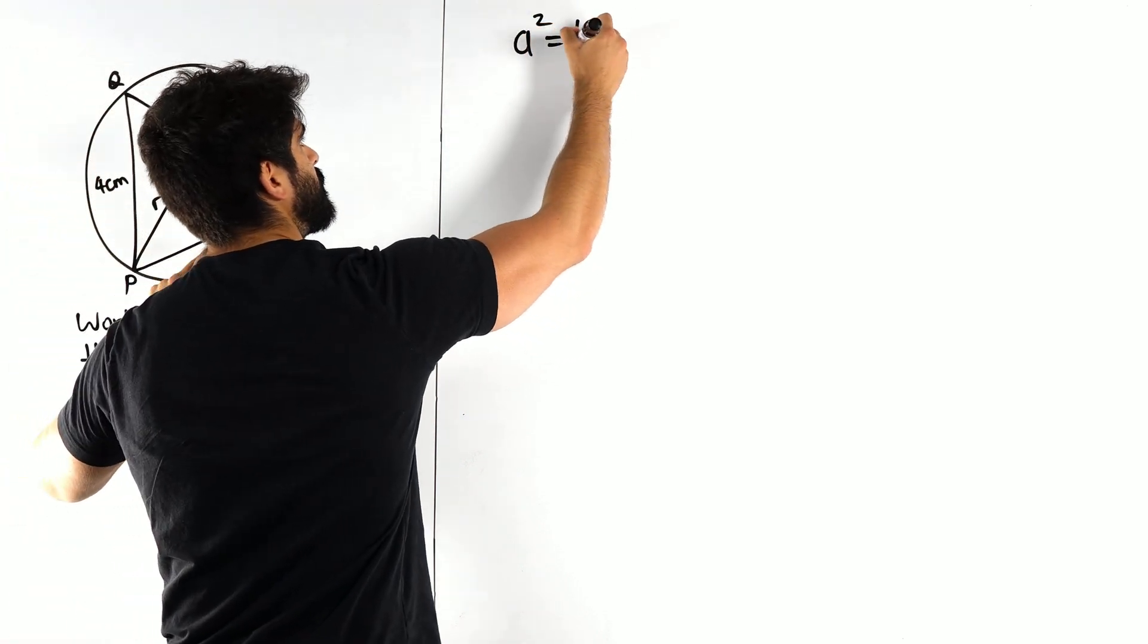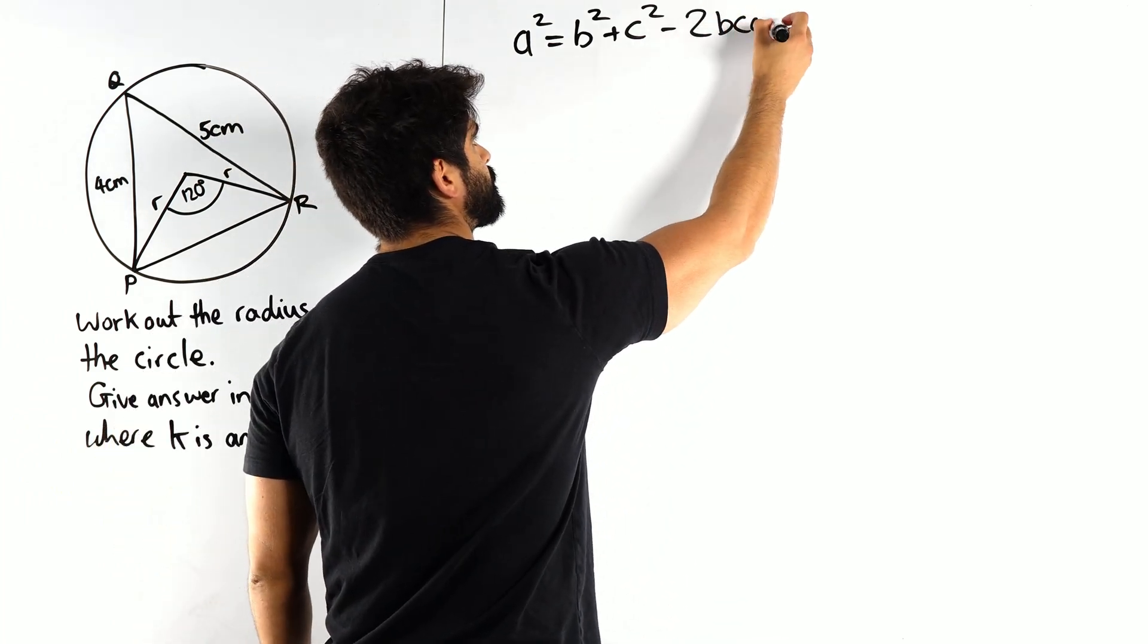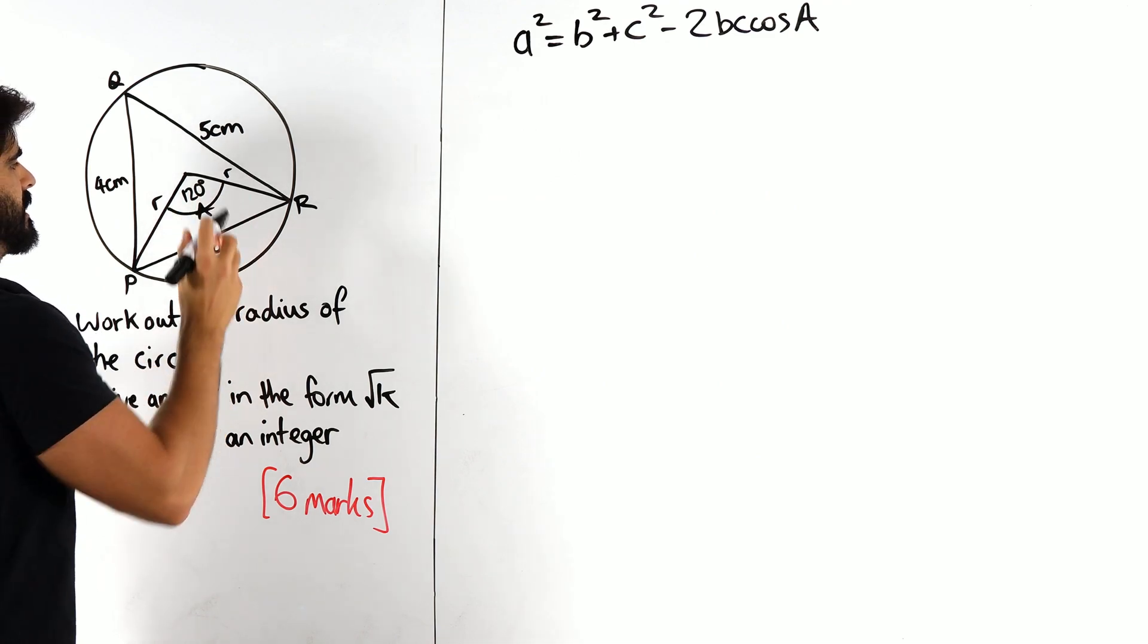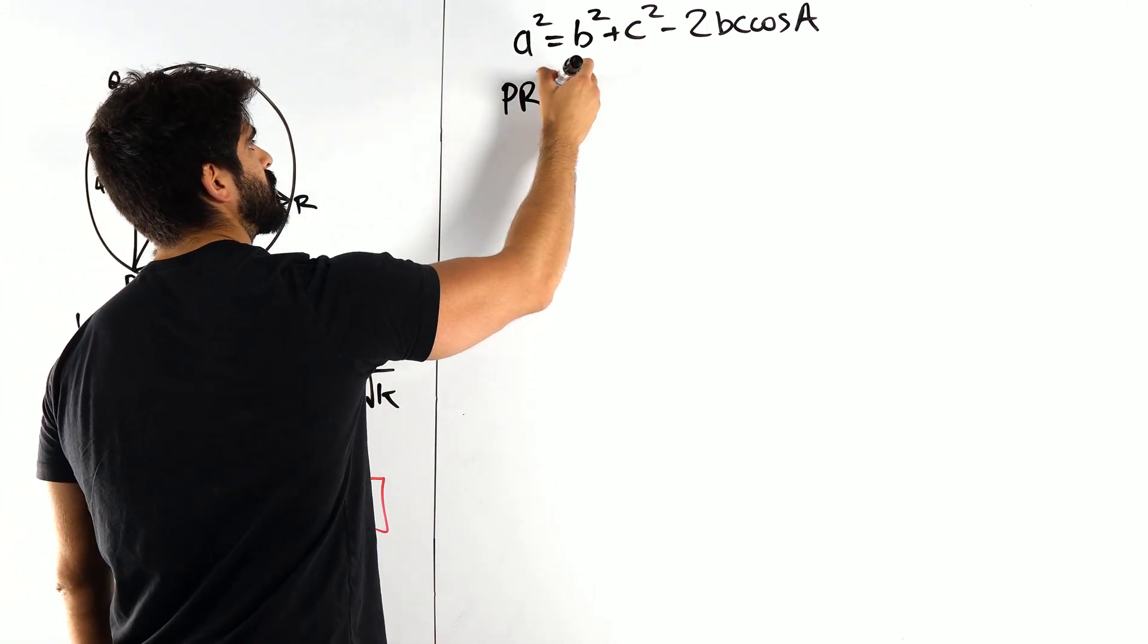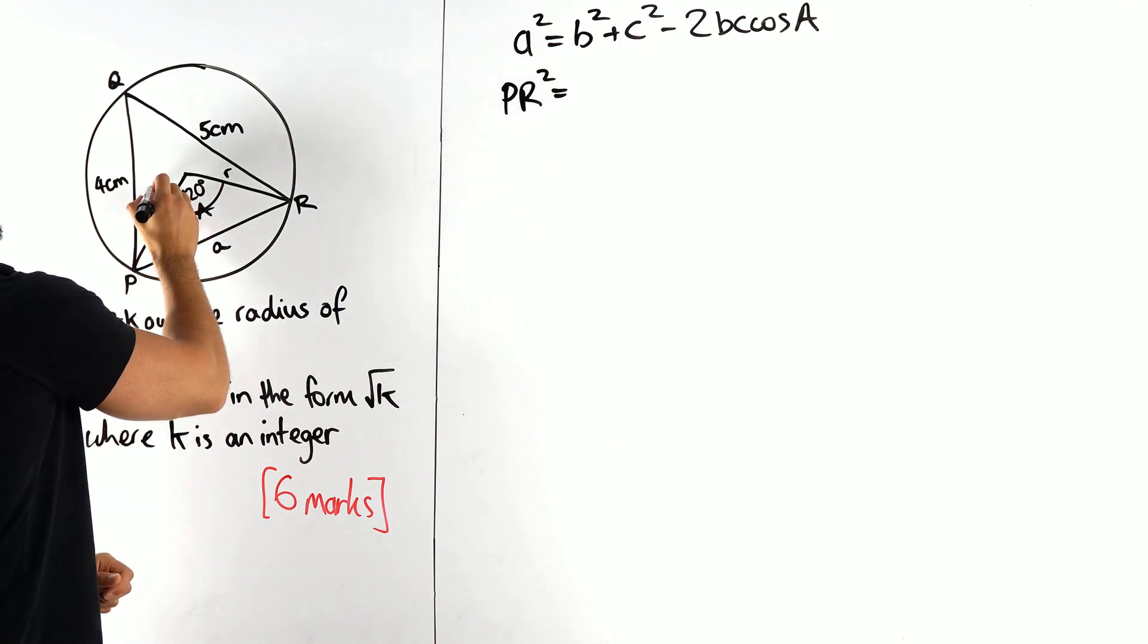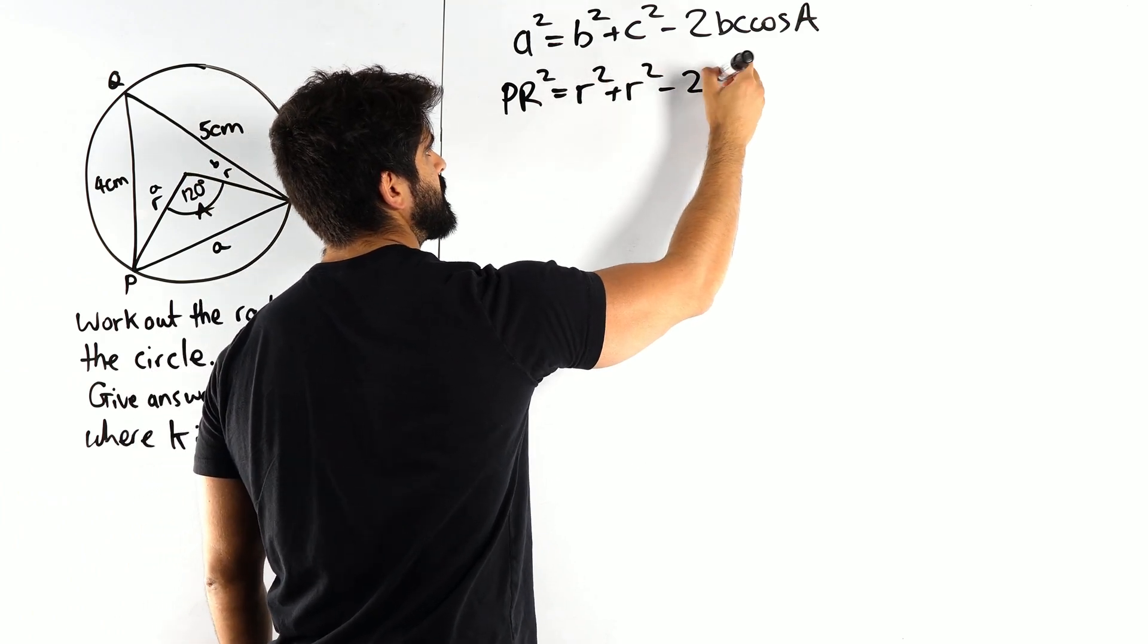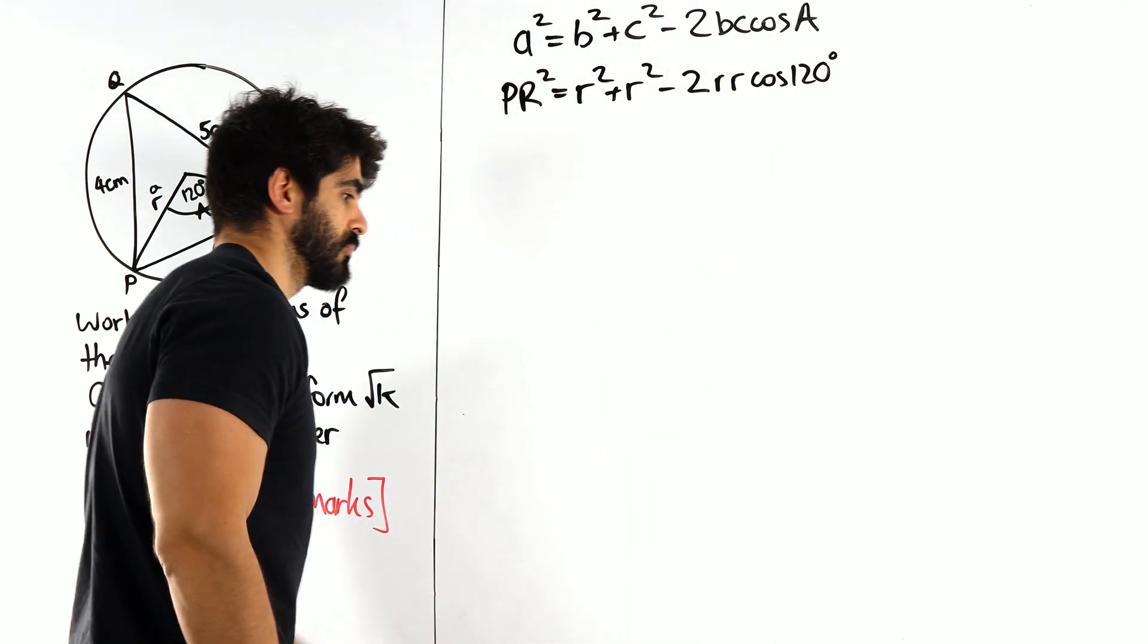A squared, so it's Pythagoras' theorem, but then we minus 2bc cos A. The angle in question is 120, so that's my capital A, and my lowercase a is the opposite, PR. So PR squared is r squared plus r squared, so that's your A and B in no particular order. r squared plus r squared minus 2bc, r times r cos of 120 degrees.